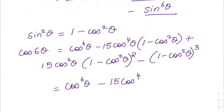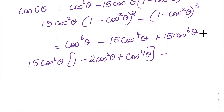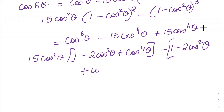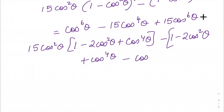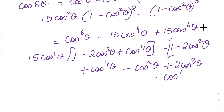When you expand this out, collecting terms: we get plus 15cos⁶θ, then 15cos²θ · (1 − 2cos²θ + cos⁴θ), minus (cos⁴θ − cos²θ + 2cos³θ − cos⁶θ — wait). Expanding fully, you will end up with 32cos⁶θ minus...